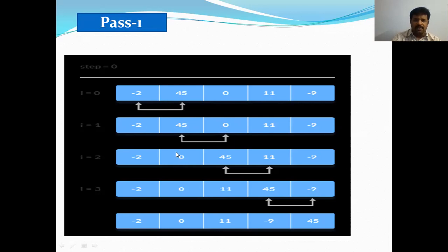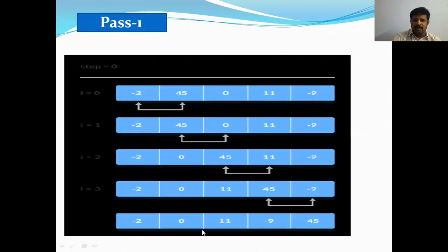After swapping, 0 moves to that position and 45 moves forward. Now compare the third and fourth elements: 45 and 11. Since 45 is greater than 11, swap them — 11 comes to this position and 45 moves next. Then compare 45 and -9: 45 is greater than -9, so swap again. -9 comes here and 45 goes to the last position. At the end of pass one, the list is: -2, 0, 11, -9, 45.